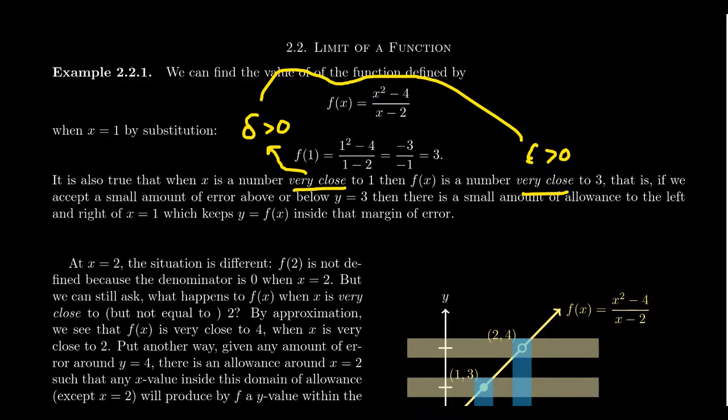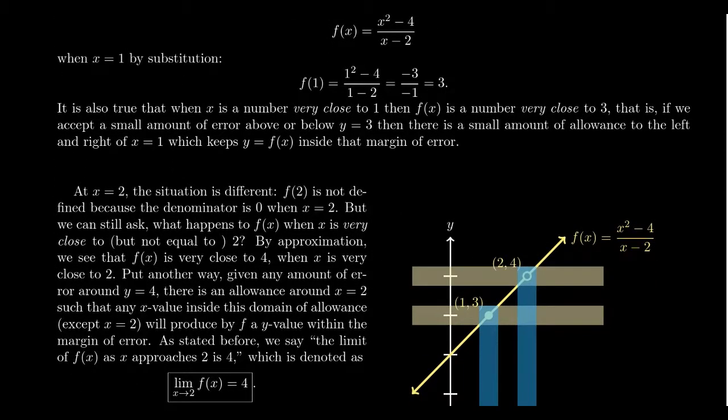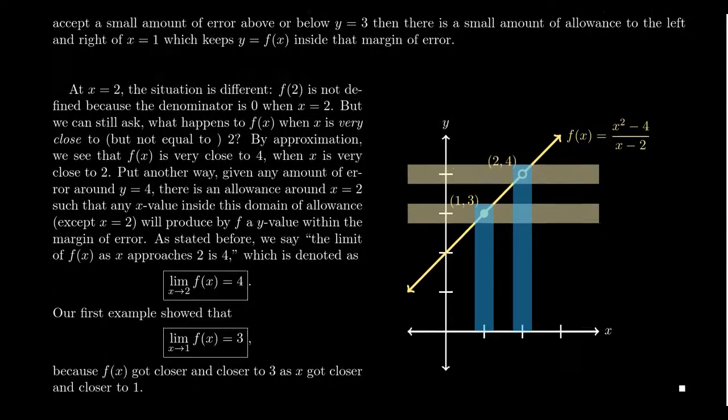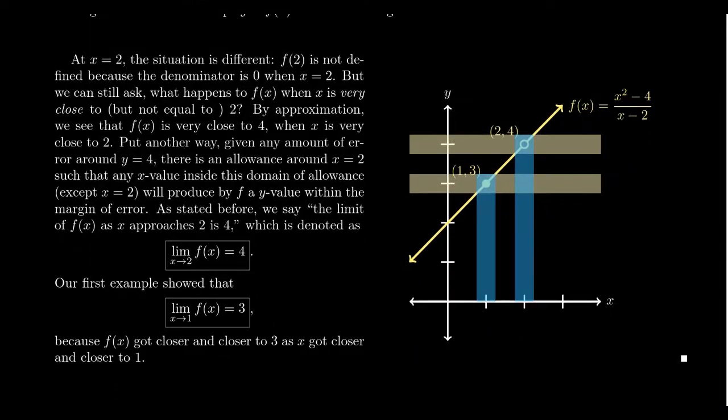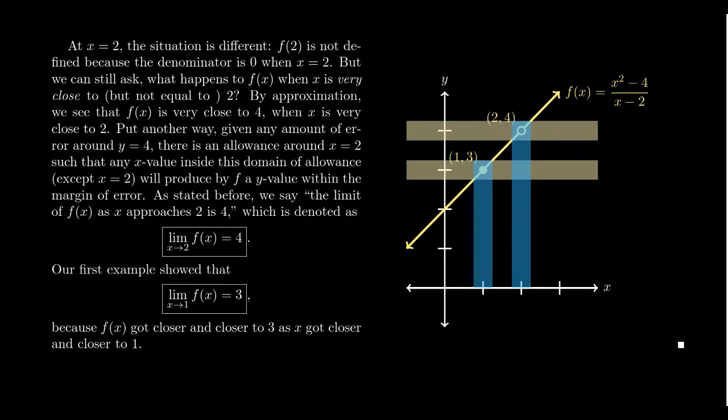Intuitively, we can understand what things like close actually mean. But from a quantitative sense, we do need to be more precise. Because otherwise, the ambiguity can get stuck in logical traps. That's the need for this epsilon delta stuff. So why do we care about things being close? f of one equals three.